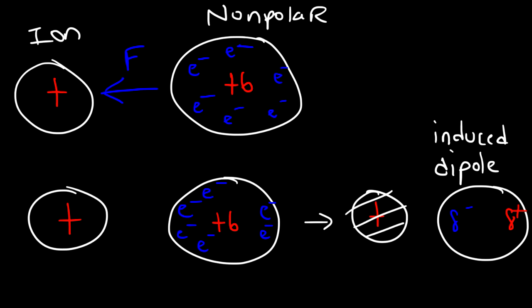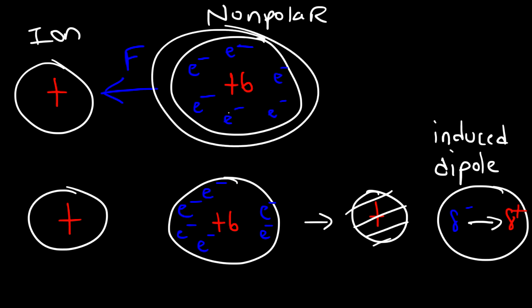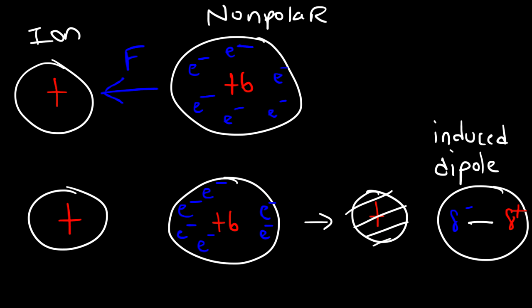If we were to remove the positive charge, the electrons will drift towards the right side until they're evenly distributed, and at that point it will no longer be a dipole. So this dipole is temporary — it doesn't last long, and it's only present in the presence of this positive charge. So it's a temporary induced dipole. Whereas if you have a polar molecule, that's a permanent dipole. Like water — water always has a positive and negative region of partial charge. Oxygen is partially negative, hydrogen is partially positive, so water being a polar molecule is a permanent dipole.